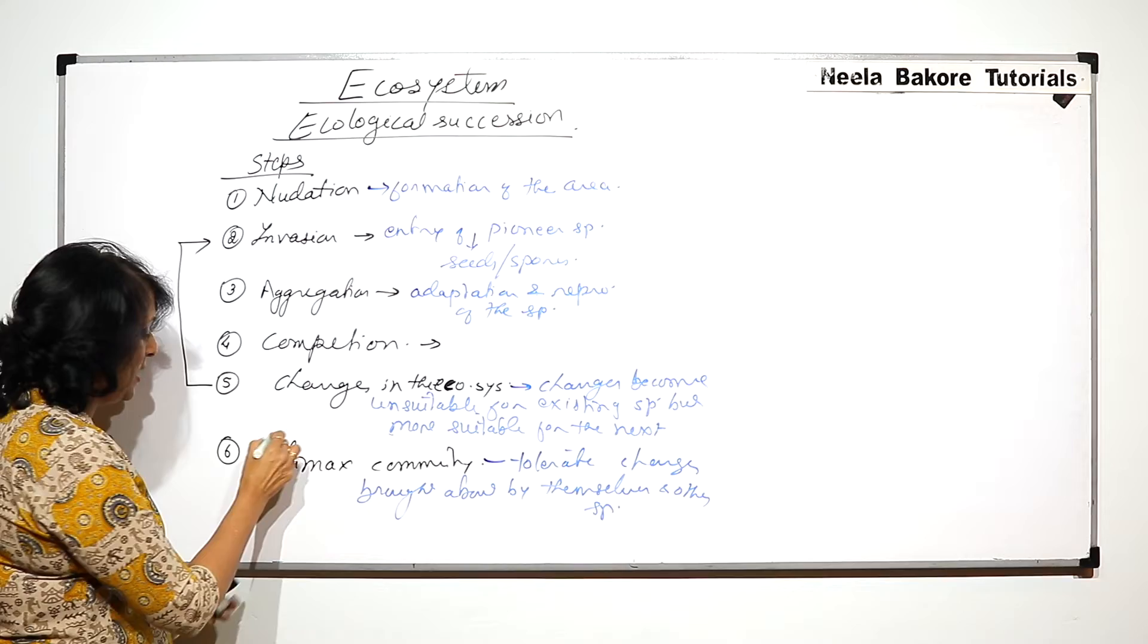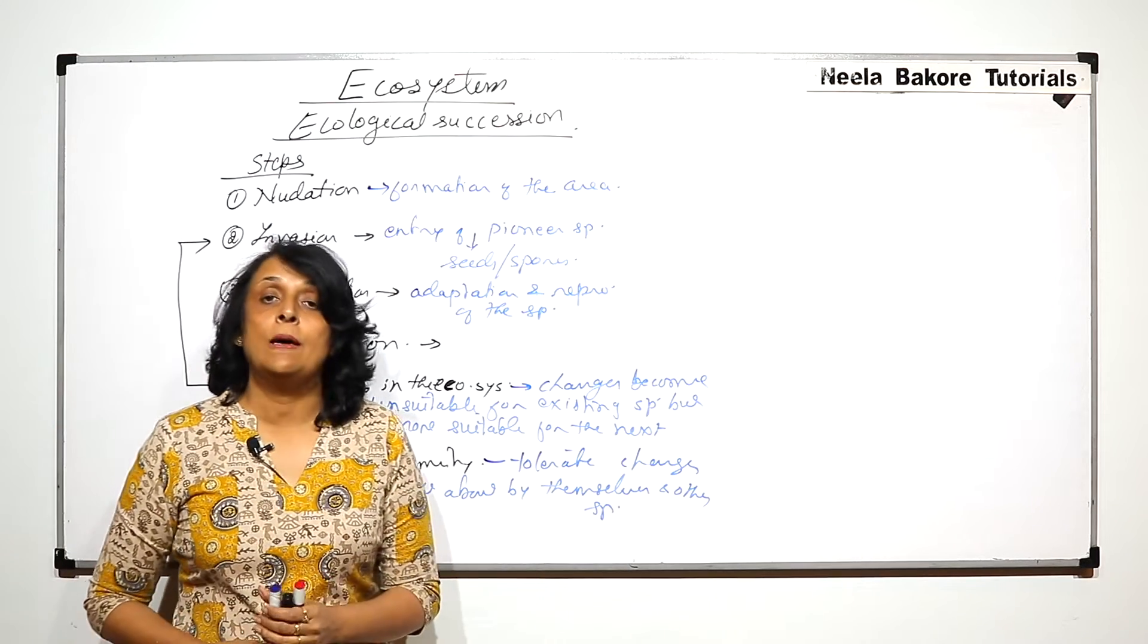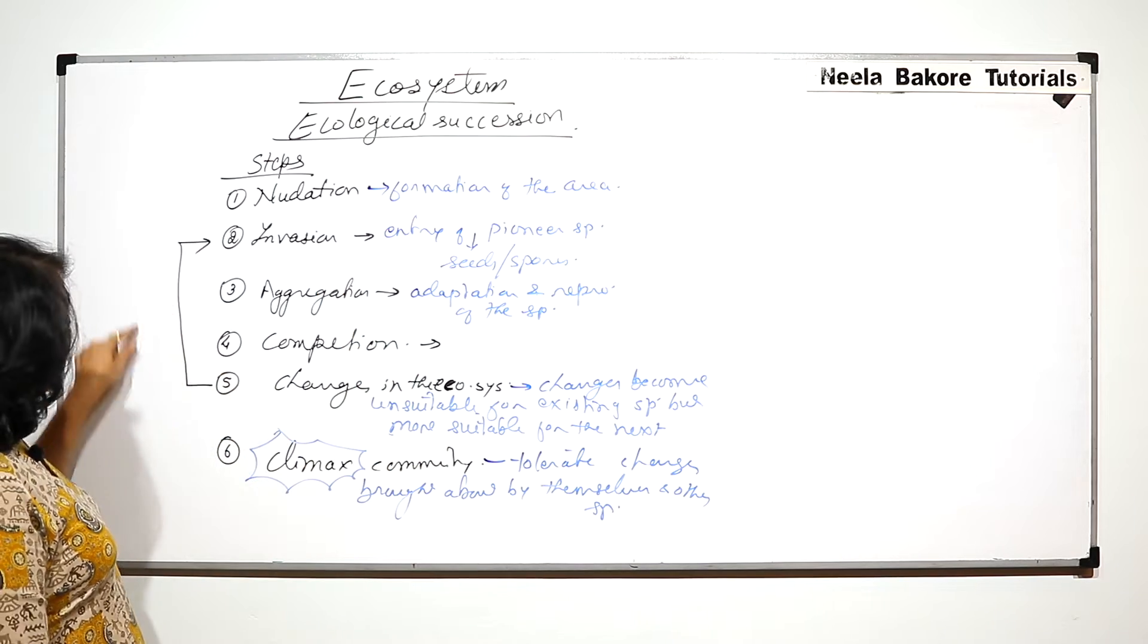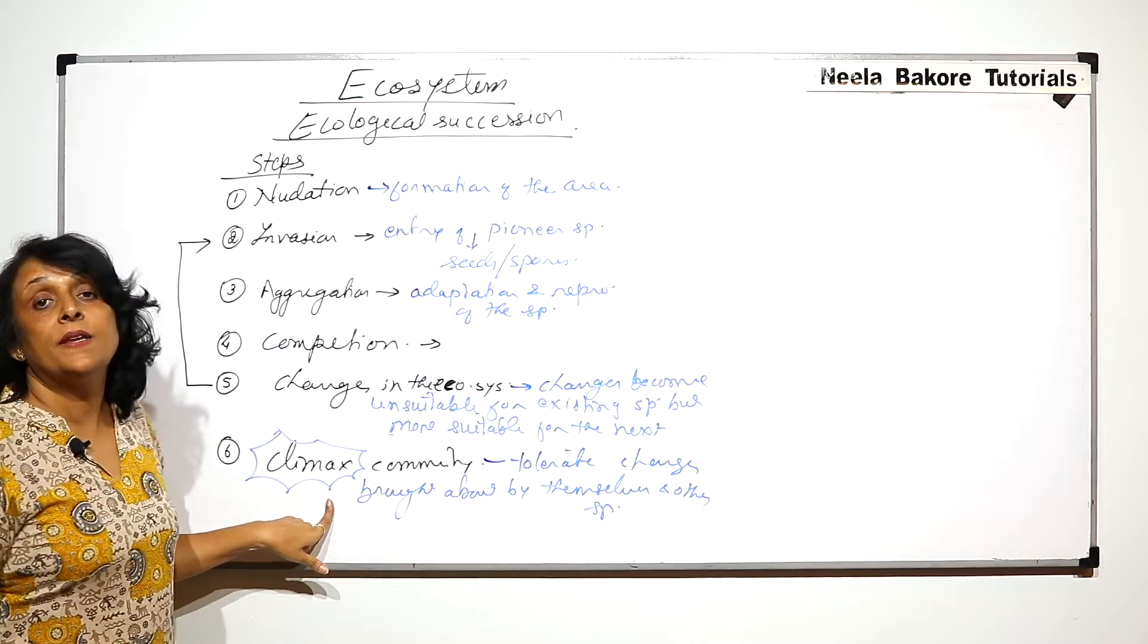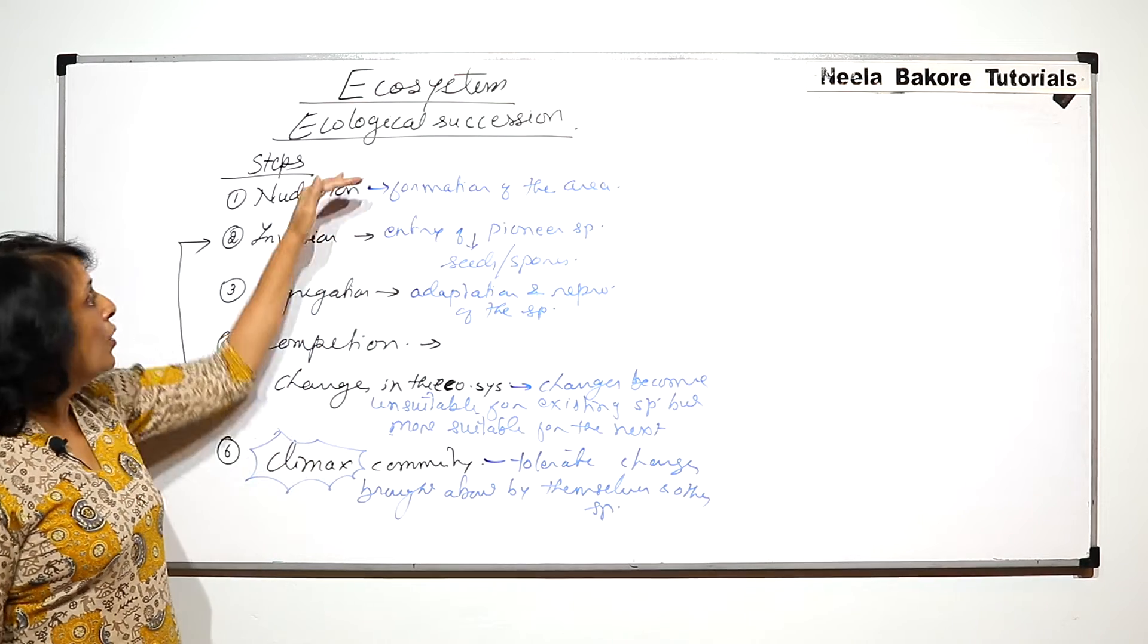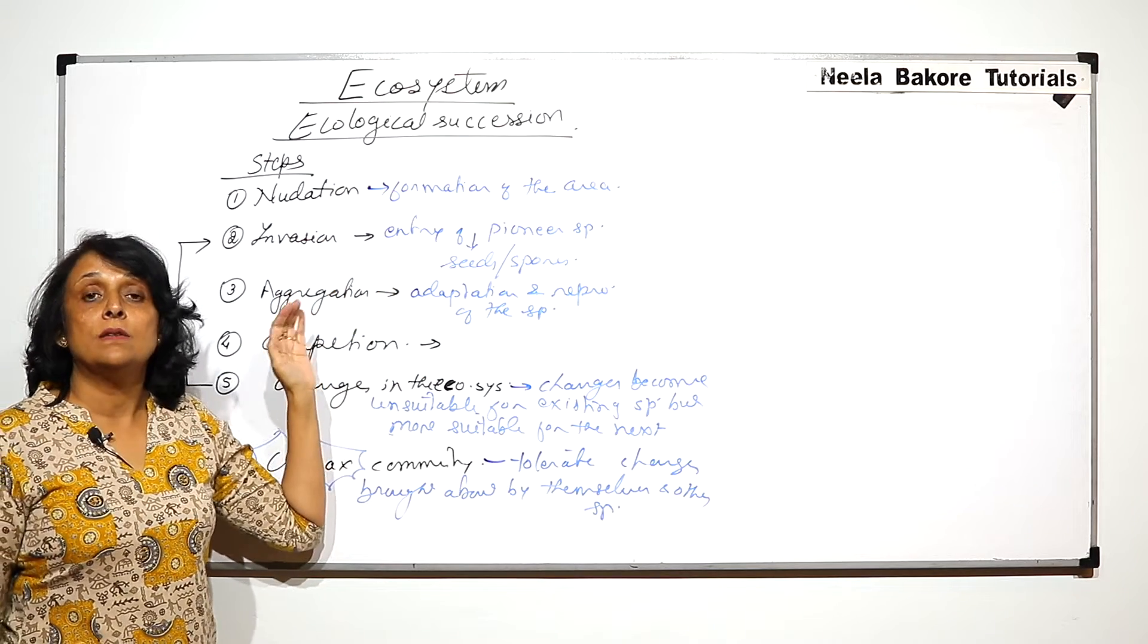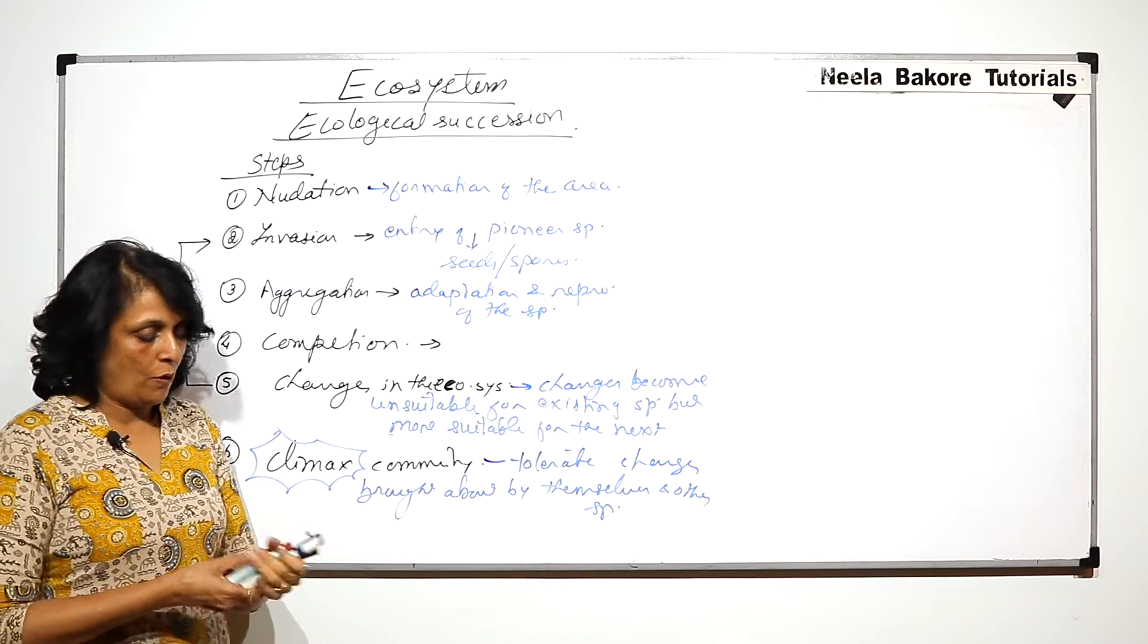Such a species will be termed as the climax species or climax communities. These are the steps and from 5 to 2 this is going to go on and on till the climax community is reached. Whether we talk about hydrosere, hydric condition, xeric condition, the same steps will be followed.